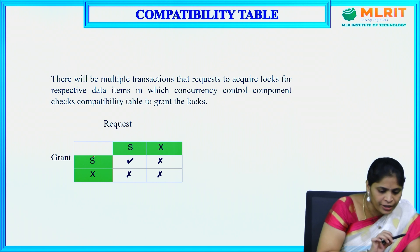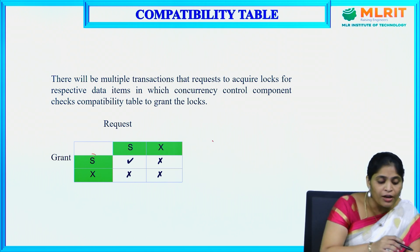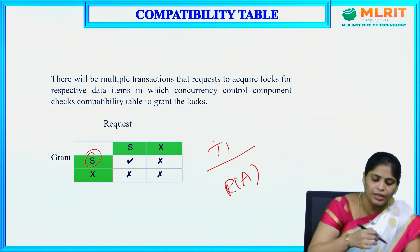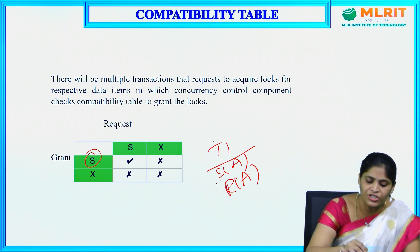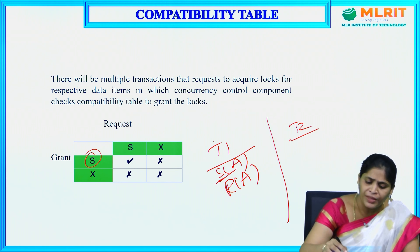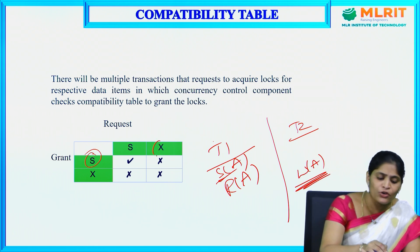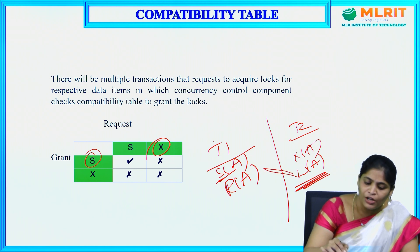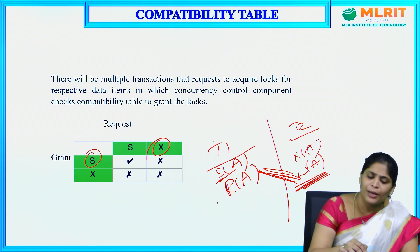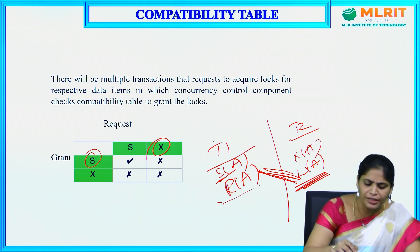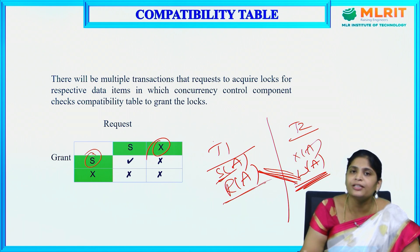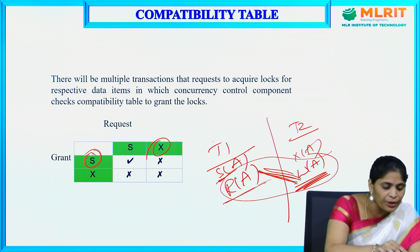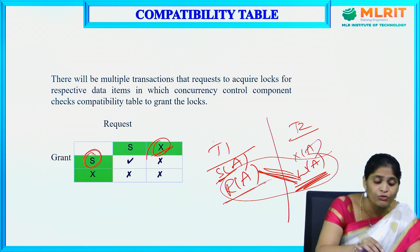Now consider: T1 acquires a shared lock for read mode. T2 comes and requests an exclusive lock — which means reading and updating. Is it possible? No, because there is a read-write conflict. Before committing the data, we must not allow another transaction to read and update the same item. That is why if one transaction has a shared lock and another requests an exclusive lock, it will not be granted.